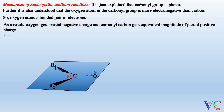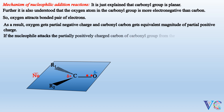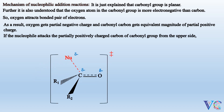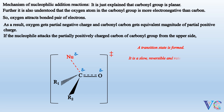If the nucleophile attacks the partially positively charged carbon of the carbonyl group from the upper side, a transition state is formed. It is a slow, reversible, and rate-determining step. In the formation of the transition state, the sp2 carbonyl carbon starts conversion to sp3 carbon.